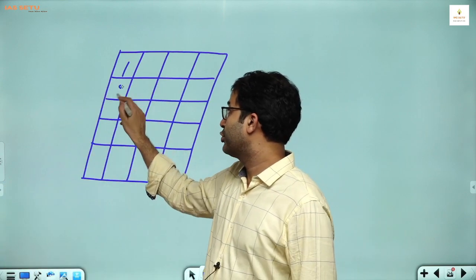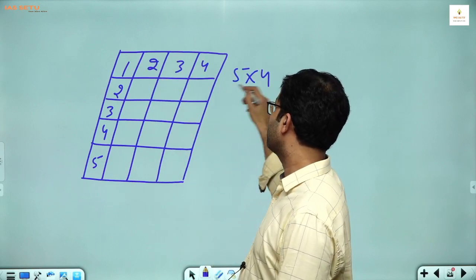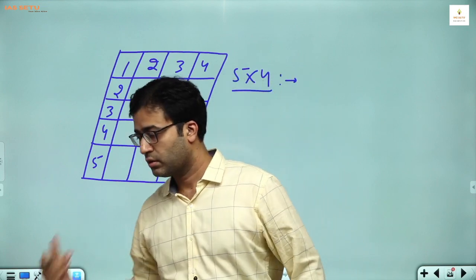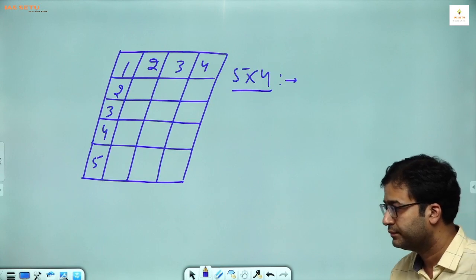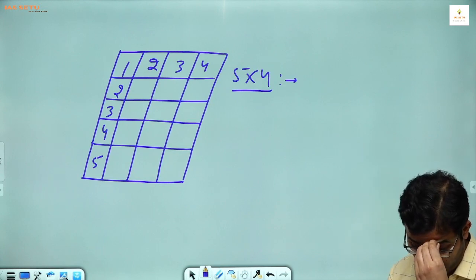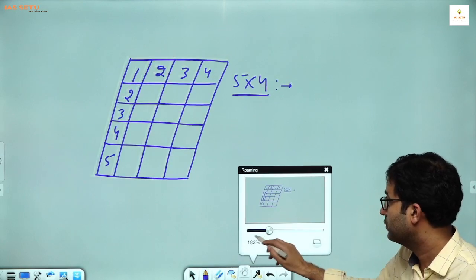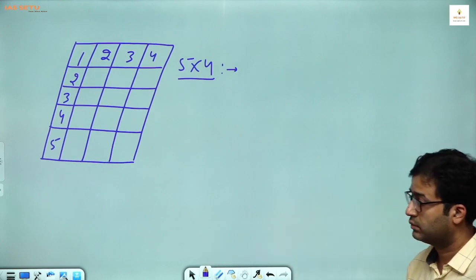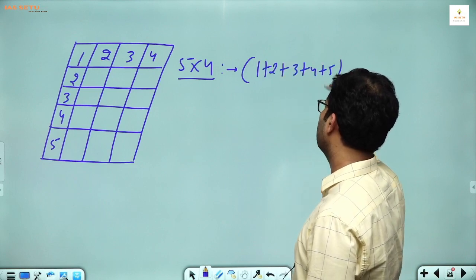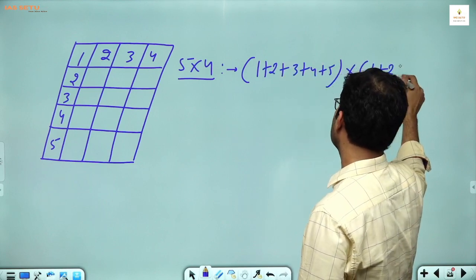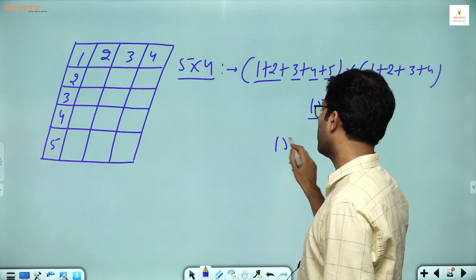This is 1, 2, 3, 4, 5 and 1, 2, 3, 4 — so this is a 5 by 4 figure. See how many parallelograms are there. Bracket start 1 plus 2 plus 3 plus 4 plus 5, into second bracket start 1 plus 2 plus 3 plus 4. That is 15 into 10. We have 150 parallelograms.